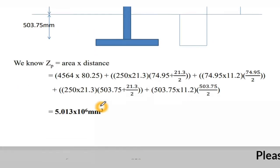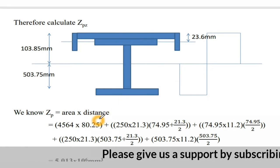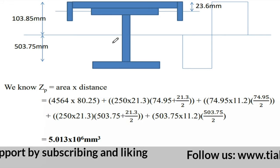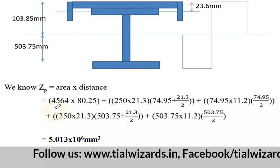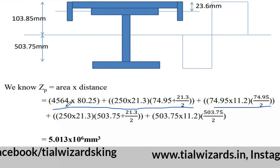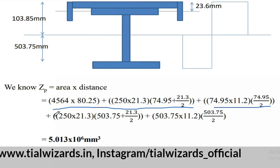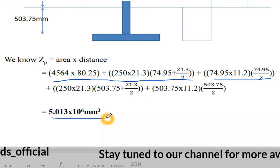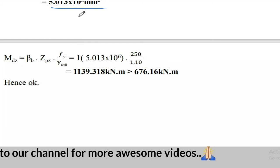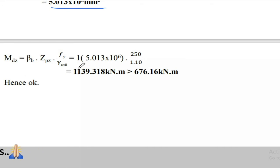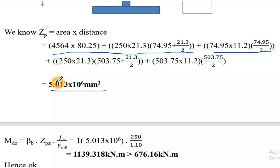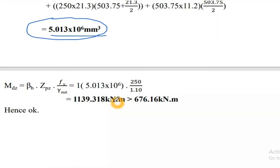Calculate the plastic section modulus Zpz. Using area × distance, Zpz = 5.013 × 10⁶ mm³. Moment capacity Mdz = βb × Zpz × fy / γm0. With fy = 250 MPa and γm0 = 1.10 (from IS 800:2007 code), total Mdz = 1139.318 kNm, which is greater than 676.16 kNm. Hence the section is safe for vertical bending.